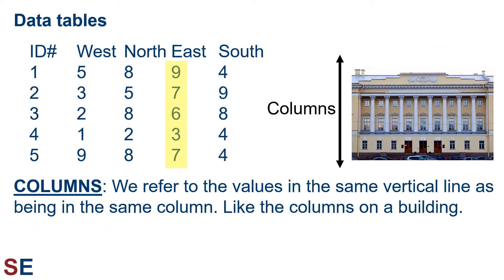We use the term columns to refer to the values in the same vertical line. The direction is up and down like the columns in the building. For example, the values in the yellow box are all in the same column.